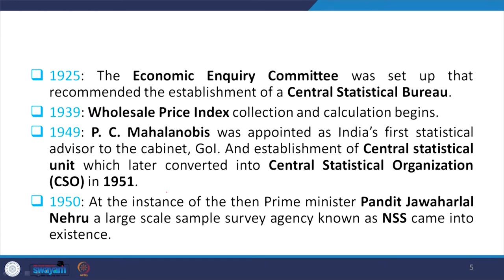In 1925, the Economic Enquiry Committee was set up, recommending the establishment of the Central Statistical Bureau. In 1939, wholesale price index collection and calculation began. In 1949, the famous statistician P.C. Mahalanobis was appointed as the first Statistical Advisor to the Cabinet of the Government of India, and the Central Statistical Unit (CSU) was established, which was later converted to the Central Statistical Organization (CSO) in 1951. CSO is the most authentic source for understanding the national income of the country.